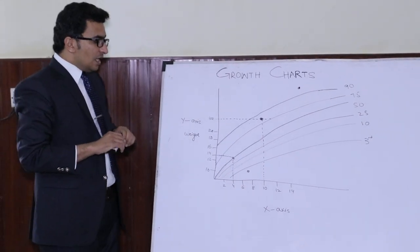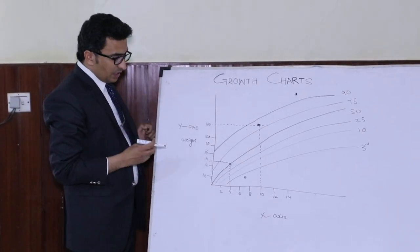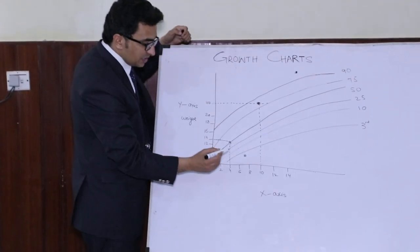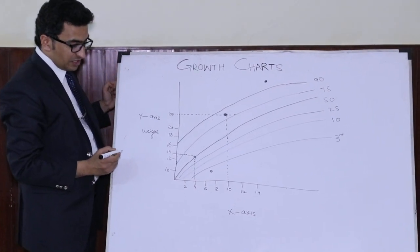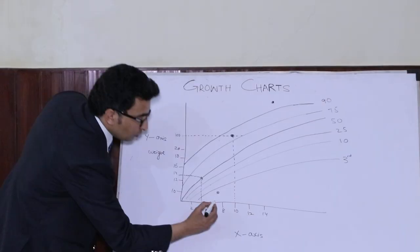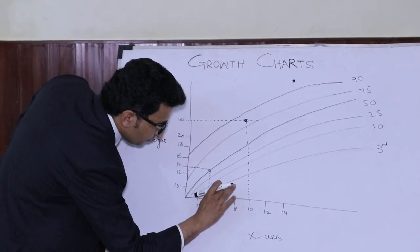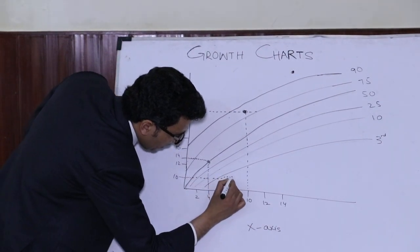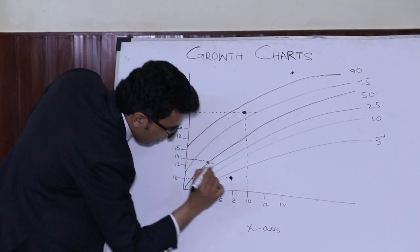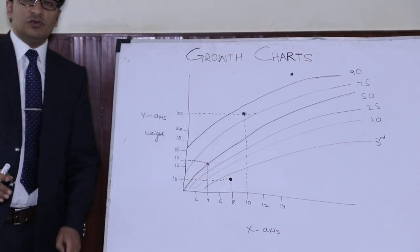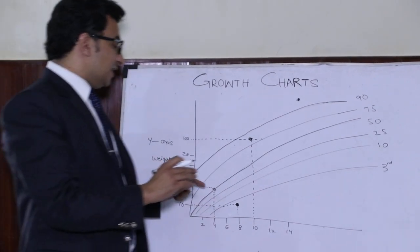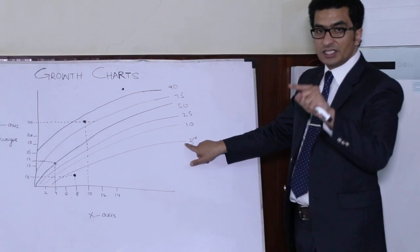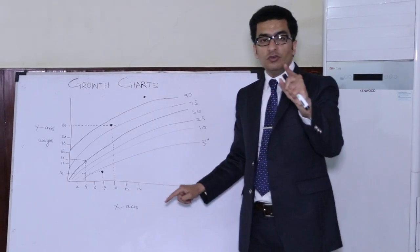Let's suppose the examiner tells you that the boy is eight years old and his weight is 10 kg. You need to put a dot from the eight-year point and a dot from the 10 kg point, then see where the final dot comes. In this case the final dot falls at the lowest centile line, which is the 3rd centile, so you will say that the weight of this child lies at the 3rd centile.